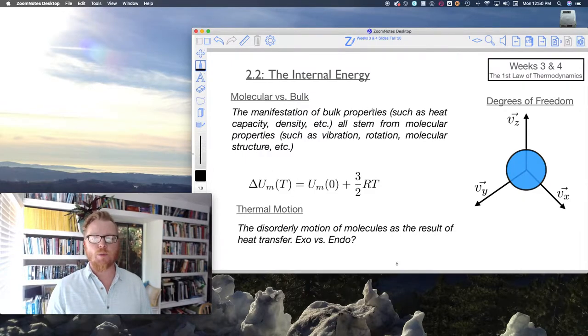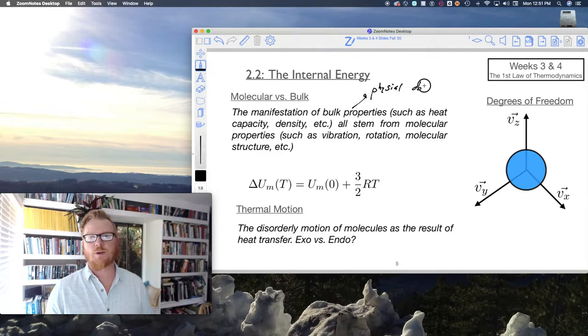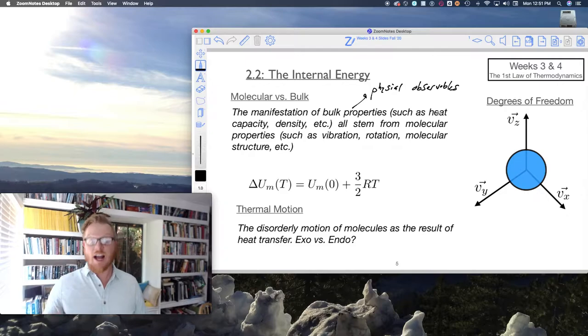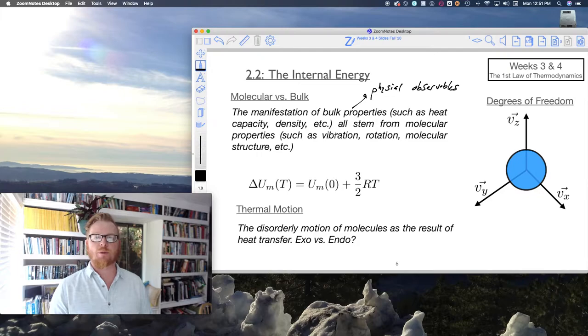The manifestation of bulk properties, and by bulk properties that could be heat capacity, density, all of these things that you'll also hear me call physical observables. We can even call it chemical observables in the case of it being a bulk chemical property, such as oxidation state. All of these bulk properties, these physical observables, all stem from molecular properties.